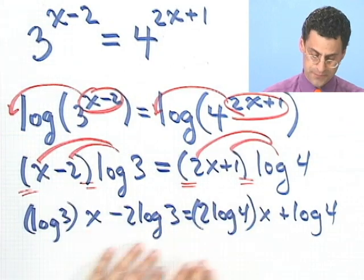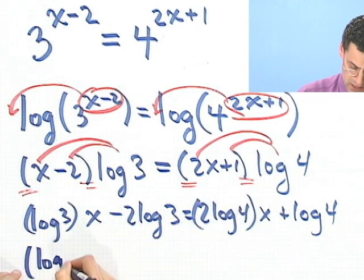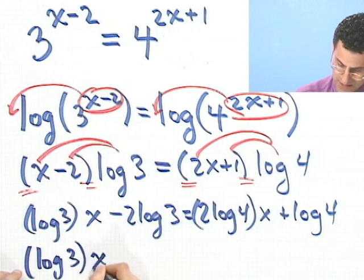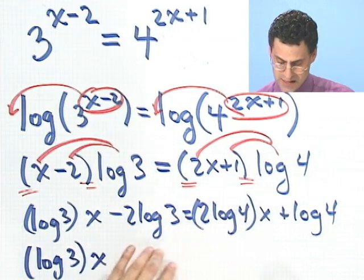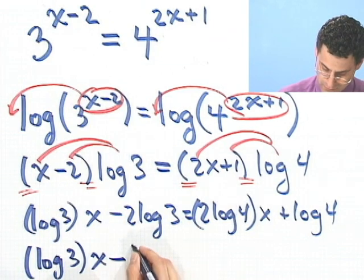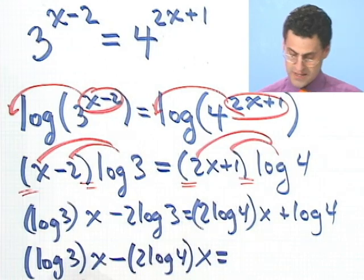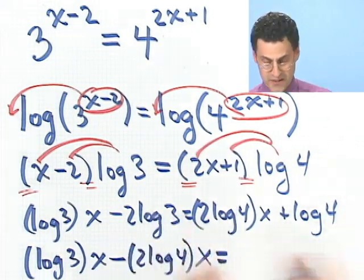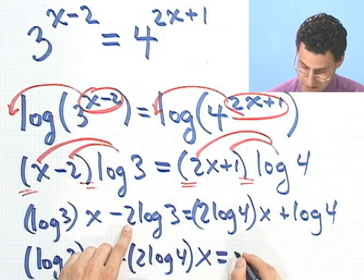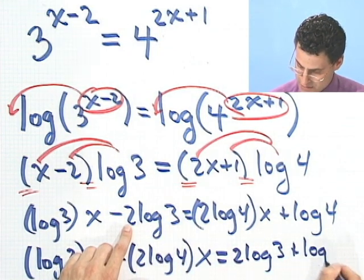Okay, well now what can I do here? I want to solve for x. I'll just bring all the x's over to this side. And if I do that, I see log 3 times x. And then I have a minus, I subtract this, so I have minus 2 log 4 x.